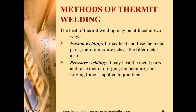Methods of thermite welding: The heat of thermite welding may be utilized in two ways. Fusion welding — it may heat and fuse the metal parts, and the thermite mixture also acts as a filler metal. Pressure welding — it may heat the metal parts and raise them to forging temperature, and then forging forces are applied to join them.